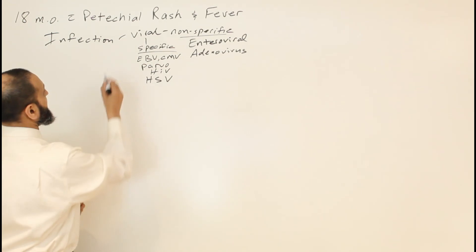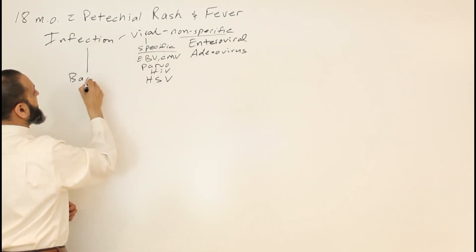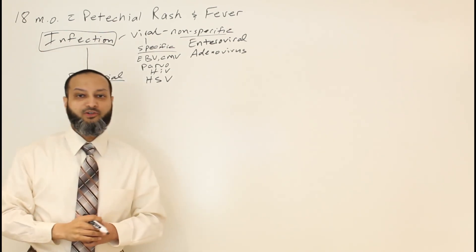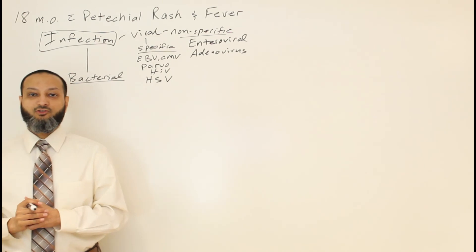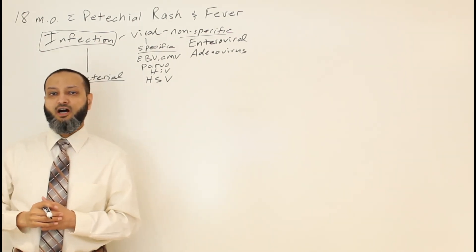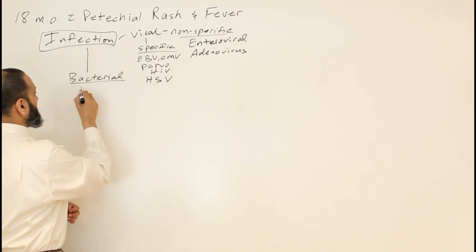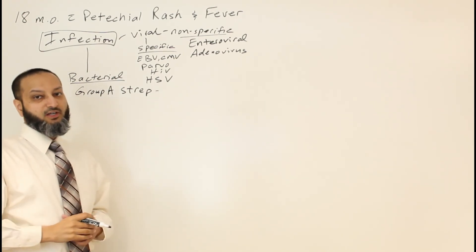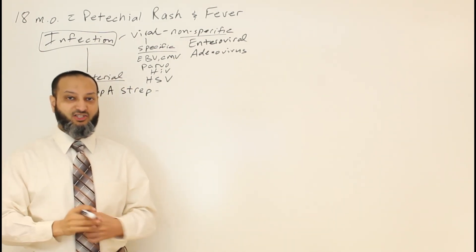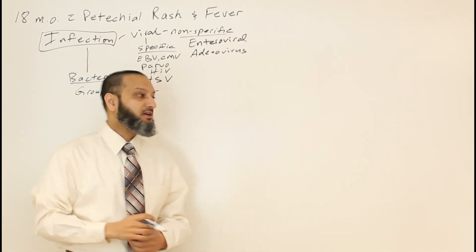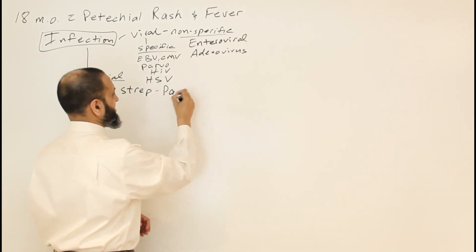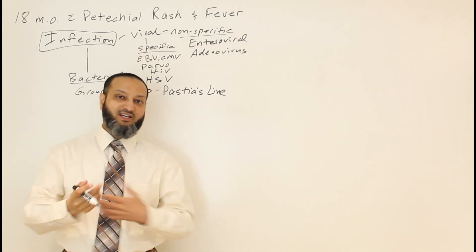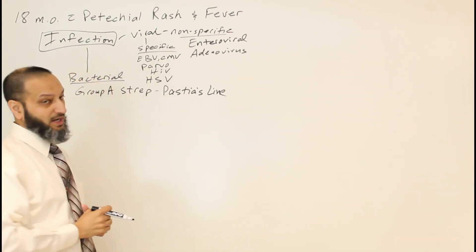Now let's talk about bacterial causes of petechial rash and fever. A common one is group A strep, which can give you a petechial rash — specifically in the antecubital fossa or popliteal fossa, giving more petechiae. This is called Pastia's lines: petechial rash associated with strep in the antecubital or popliteal fossa.